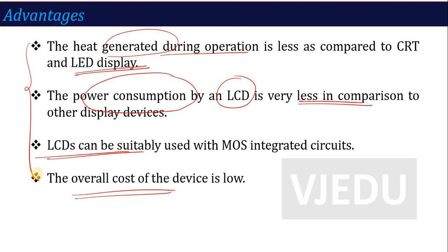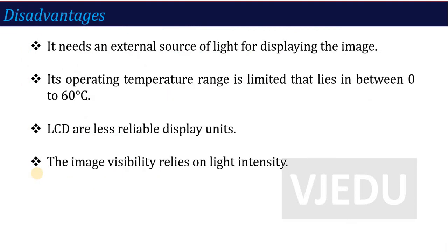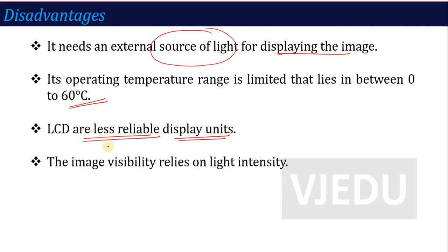These are some of the advantages of LCD. Regarding disadvantages: it requires an external source of light for displaying the image. It requires a limited temperature range, lying between 0 to 60 degrees Celsius. LCDs are less reliable display units, and image visibility relies on the intensity of the light source — how much intensity is provided determines the image visibility.